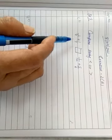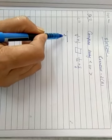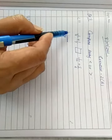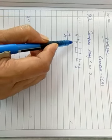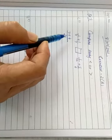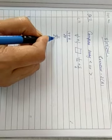1 upon 4 plus 1 upon 7. First we take LCM, 28. We add them. 4 sevens are 28, 7 ones are 7. Now 28 divided by 7, 7 fours are 28, 4 ones are 4. 7 plus 4, 11 upon 28.